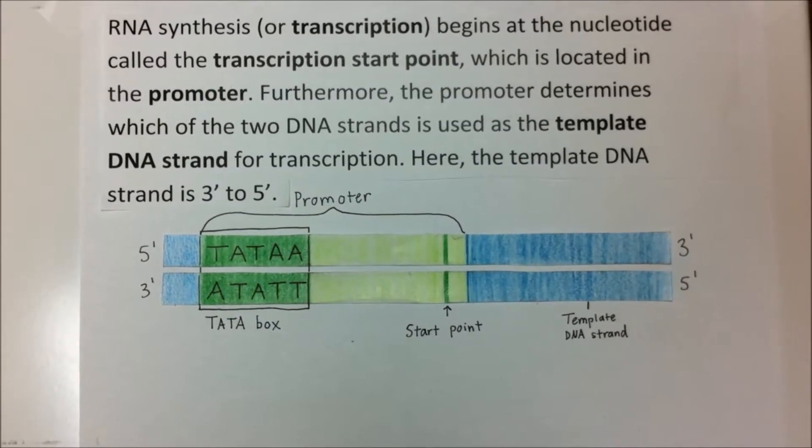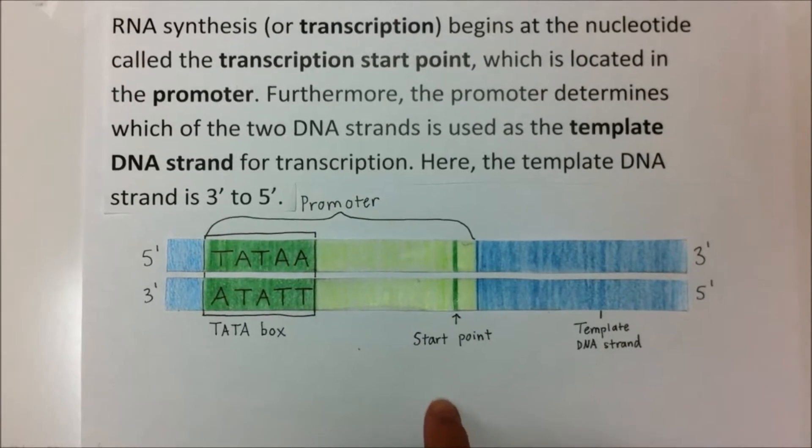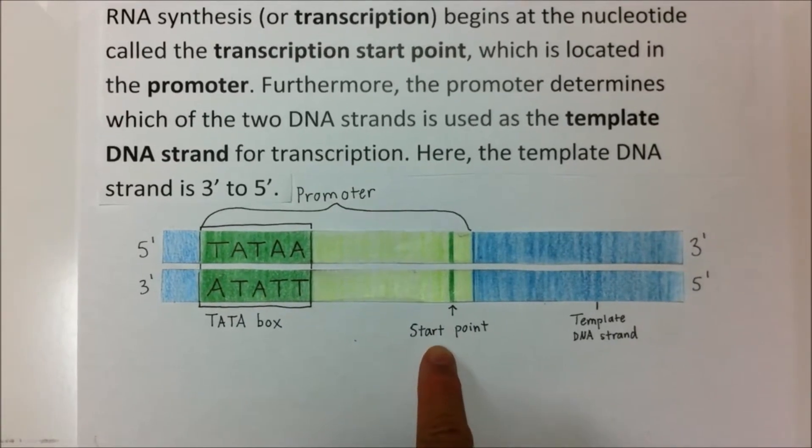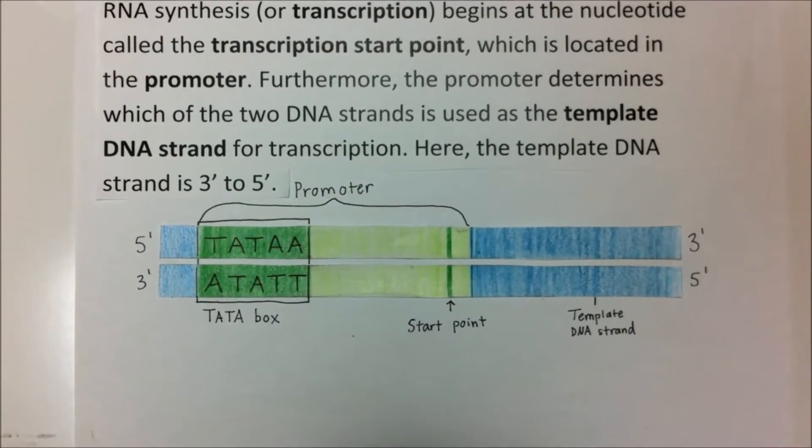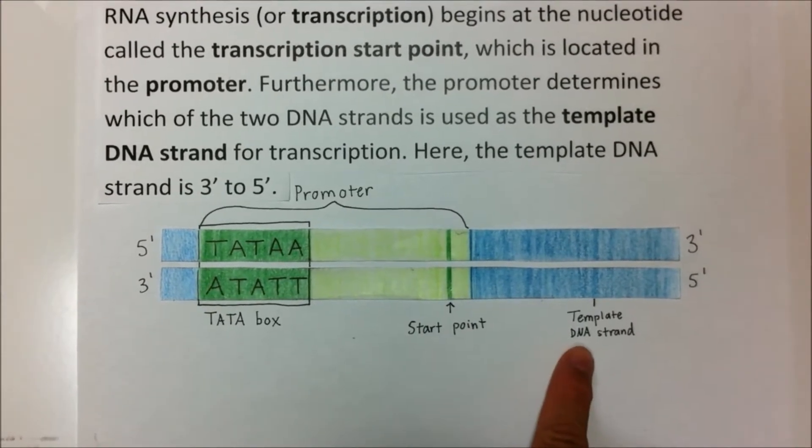RNA synthesis, or transcription, begins at the nucleotide called the transcription start point, which is located in the promoter. Furthermore, the promoter determines which of the two DNA strands is used as a template DNA strand for transcription.